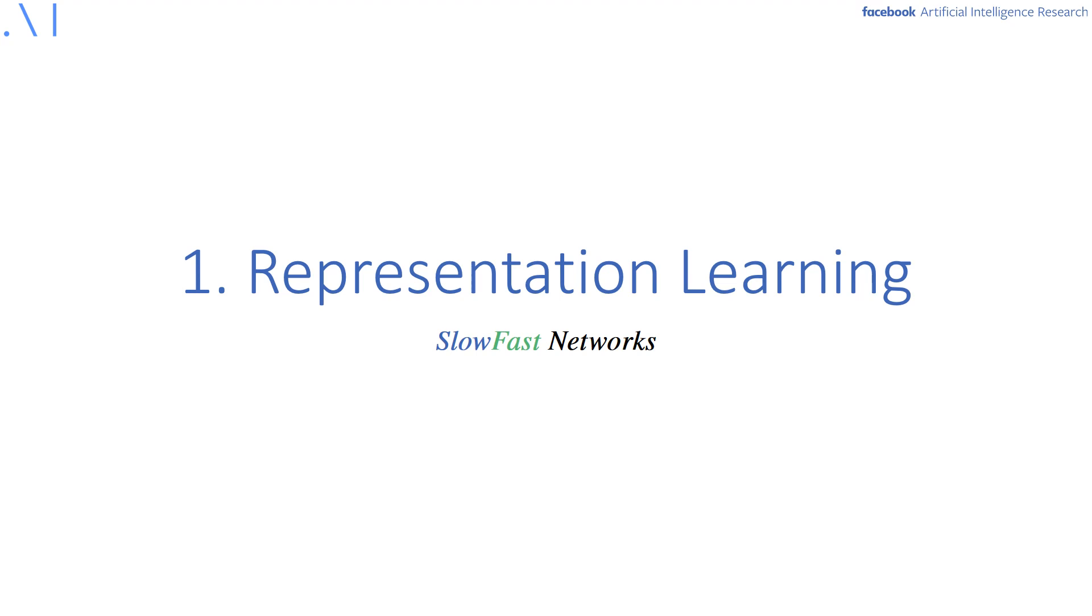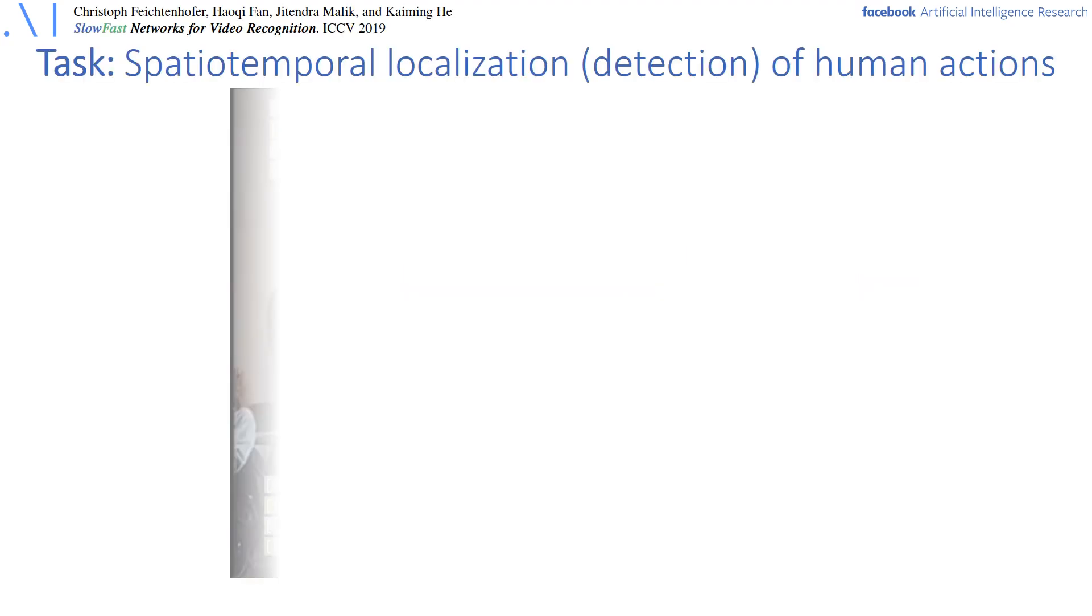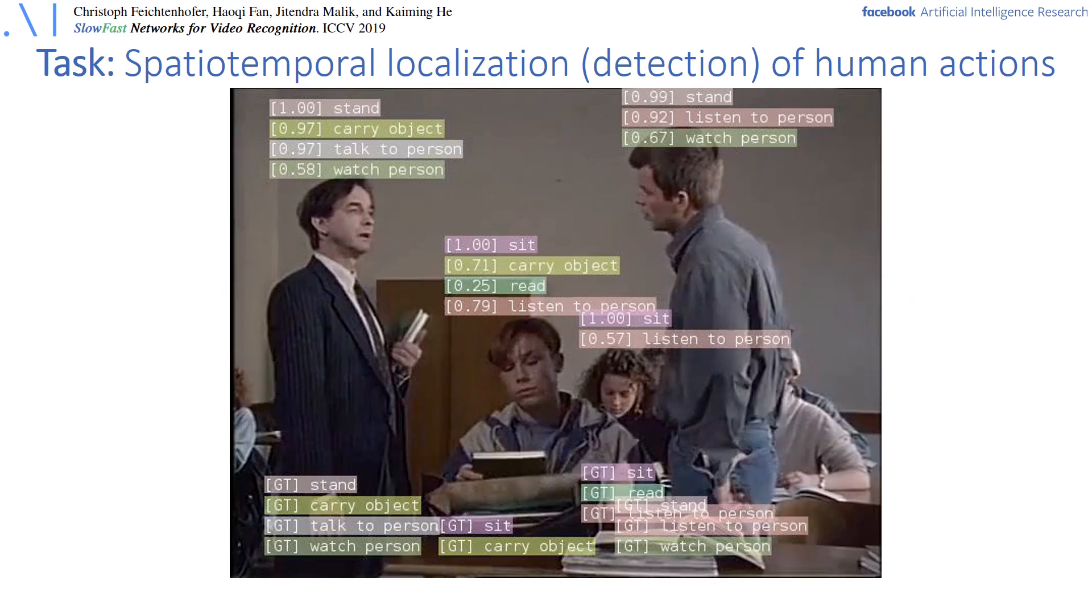For the first part on representation learning I will talk about a model called SlowFast. For this I will briefly introduce the task, which is Human Action Classification and Detection. Here the goal is to detect all atomic actions that people are performing in the scene.